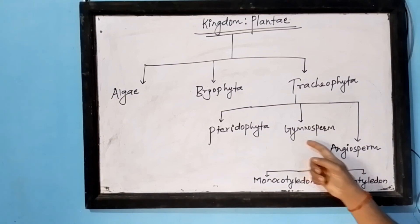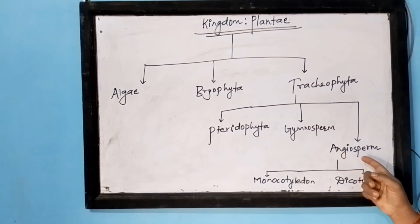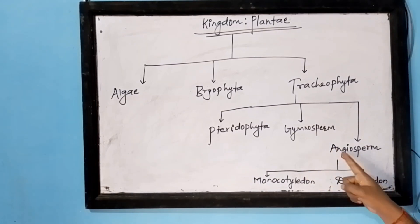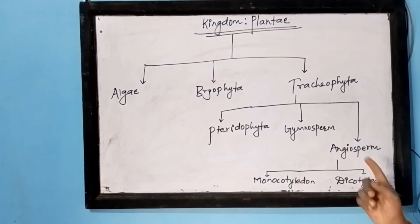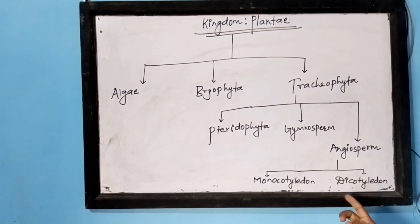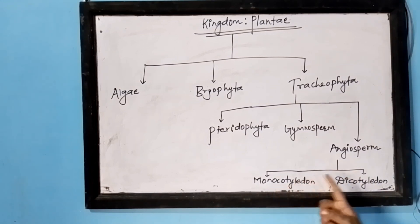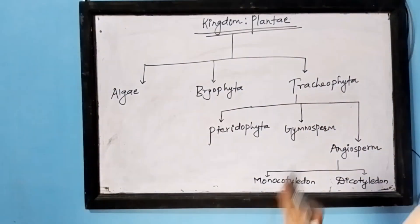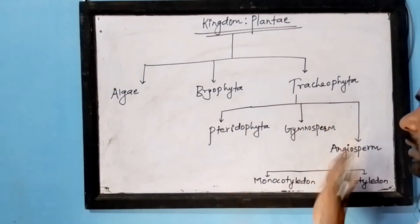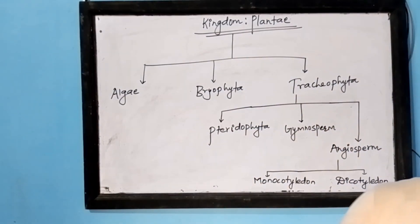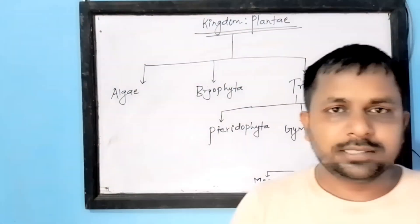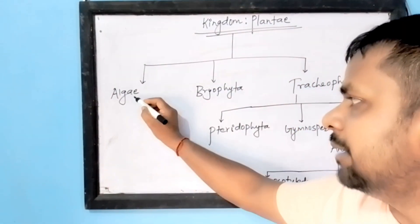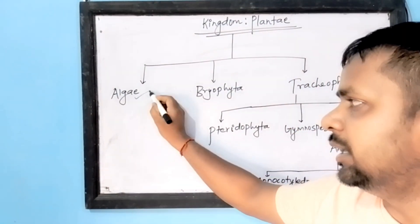Tracheophyta is further subdivided into three groups: Pteridophyta, Gymnosperm, and Angiosperm. Angiosperm is further subdivided into two classes: Monocotyledon and Dicotyledon. Now we have to study all of these in detail. Let us start by studying Algae first.